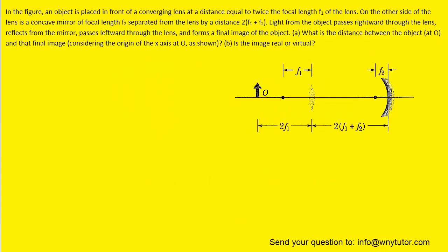If you haven't done so yet, please pause the video and try to solve the question before listening on. We can see that we have an object placed in front of a converging lens, and in that case we can apply the thin lens equation. What we want to do in the first part of this problem is locate the initial image formed by this converging lens.